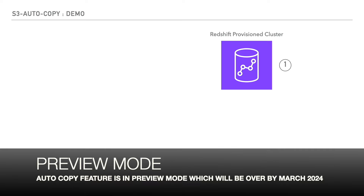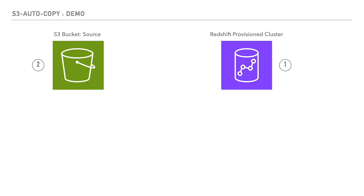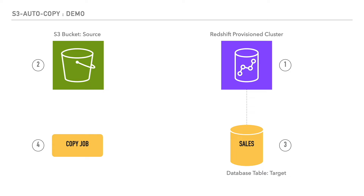In this demonstration, we are going to create and validate a sample autocopy job. We will start by creating the Redshift cluster in preview mode, ensure we have the S3 bucket and folder as the source location, then create the database table as the target — representing the sales data from the sample ticket DB. Once prerequisites are met, we will create the copy job, which reads from the source and writes to the target sales table, then validate it.